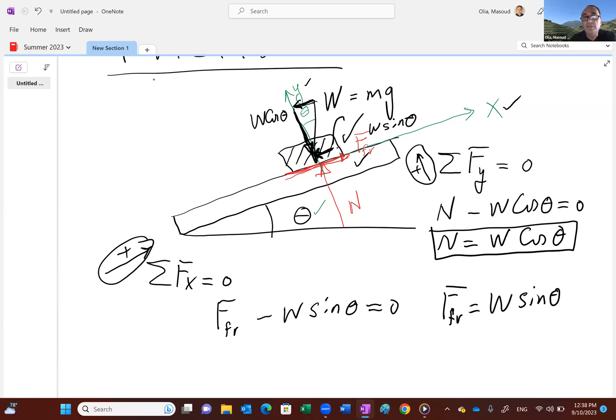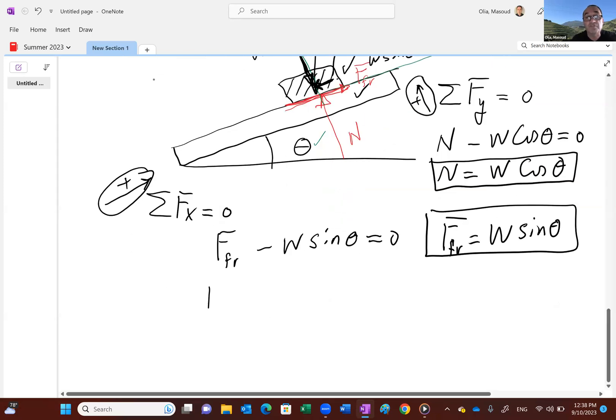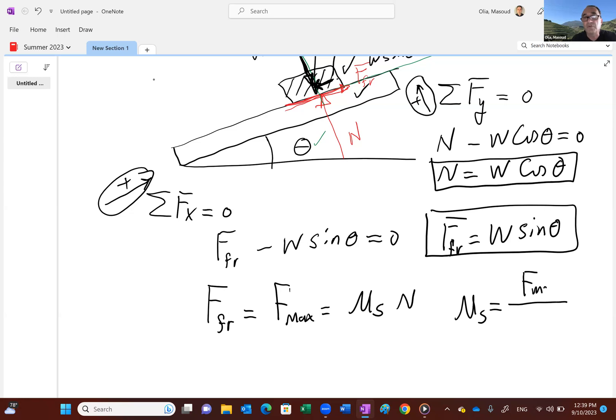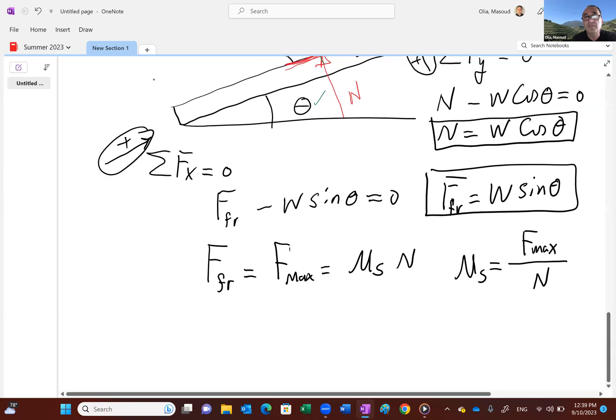Now, you guys know that the friction force, maximum static friction force, let's call it F max, is equal to mu s times n. So if you want to find the coefficient of static friction, that would be friction force or maximum friction force divided by n. So let's go ahead and divide this.